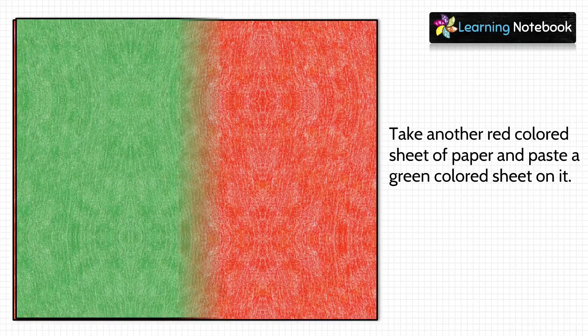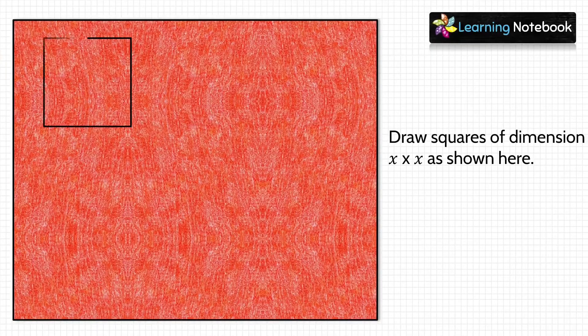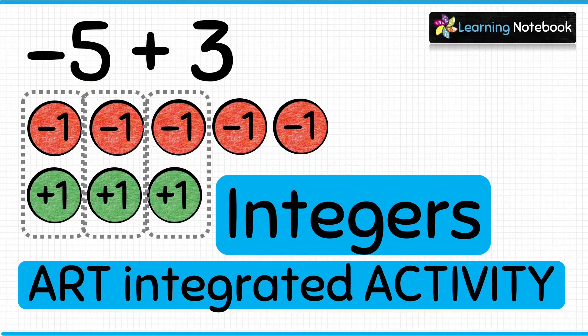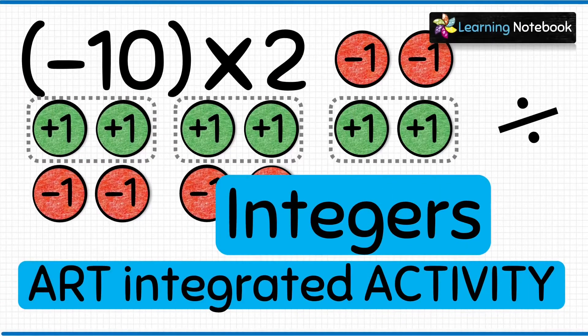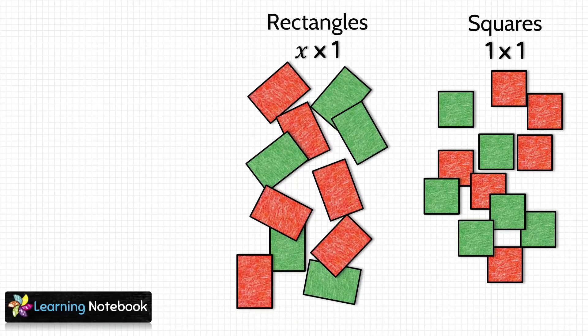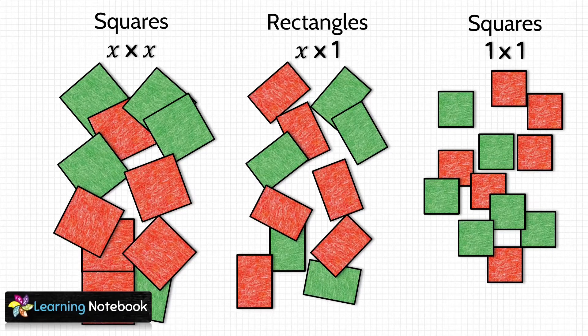Again, take another red colored sheet and paste a green colored sheet on it. This time, we will draw and cut out squares of dimension x by x units on it. So now we have cut out small squares of dimension 1 by 1 units, rectangles of dimension x by 1 units, and big squares of dimension x by x units.